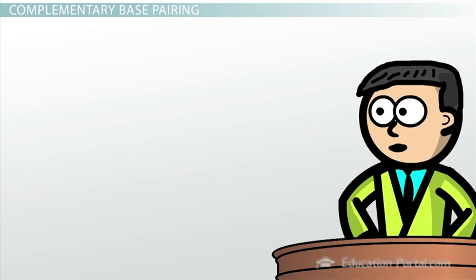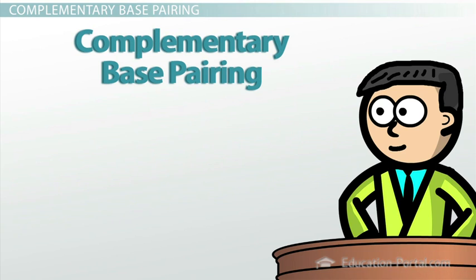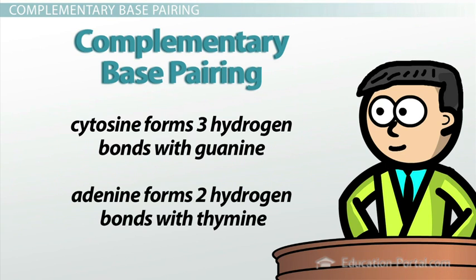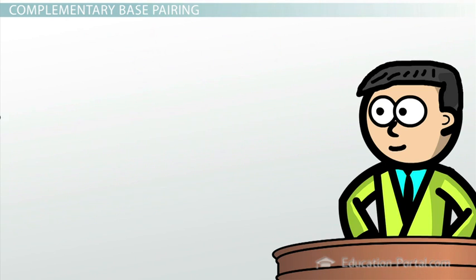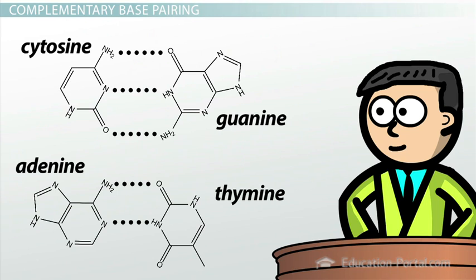Yes. The chemistry of nitrogenous bases is really the key to the function of DNA. It allows something called complementary base pairing. You see, cytosine can form three hydrogen bonds with guanine, and adenine can form two hydrogen bonds with thymine. Or, more simply, C bonds with G and A bonds with T.